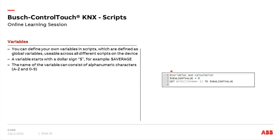A value doesn't have to be a fixed number or text — we can also use variables. To create a new variable, select the dollar icon, decide the name, and give it a start value. The name is flexible; it's always easier for understanding to use a descriptive name that explains the task of the variable. This variable can then be changed by mathematical functions, and we can write the group address with the newly calculated value.